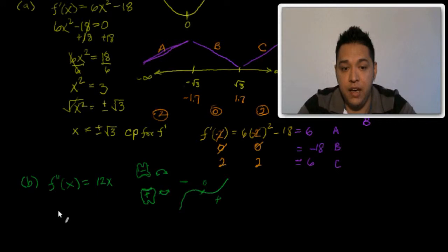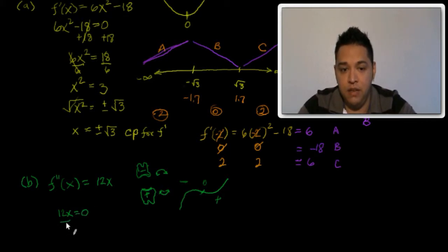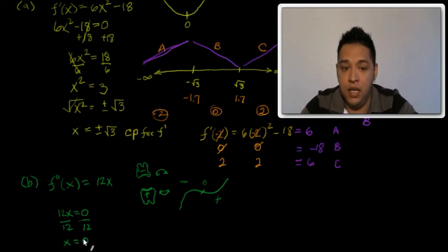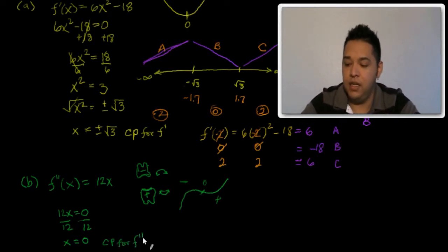Somewhere between a frown and a smile we have zero. So we take 12x and set it equal to zero. Dividing both sides by 12, we get x equals zero. That's our critical point for the second derivative.